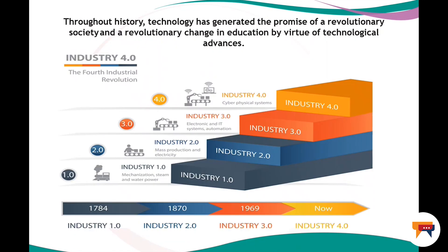Throughout history, technology has generated the promise of a revolutionary society and a revolutionary change in education by virtue of technological advances. Figure 5.1 shows Industry 4.0 and how things have transformed — this is the fourth industrial revolution figure that gives you an idea of what this entails.